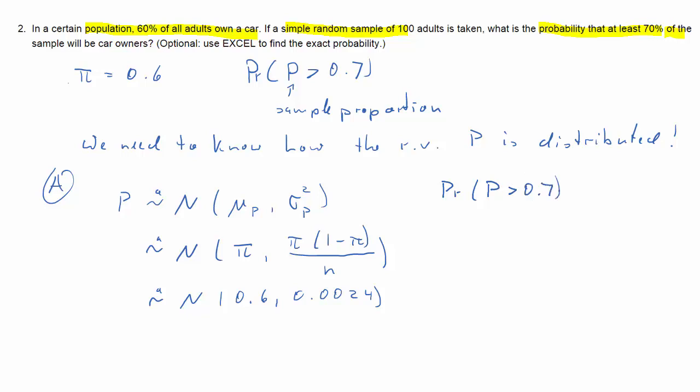So with that information, we can actually now calculate the probability that P̂ is larger than 0.7. We need to translate it into a standard normal problem. So that's the same as the probability that Z is larger than 0.7 minus the mean 0.6, divided by the square root of the variance, which is 0.0024.